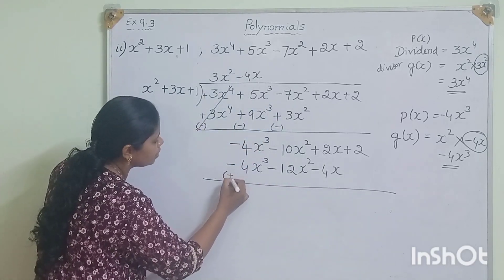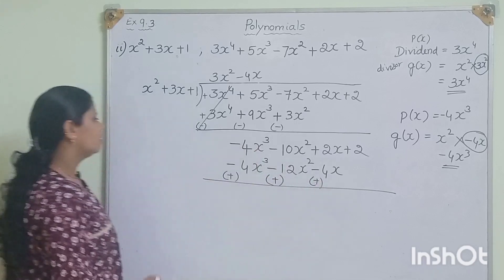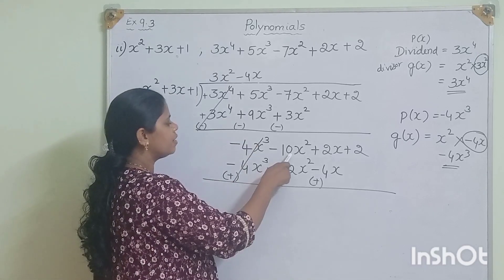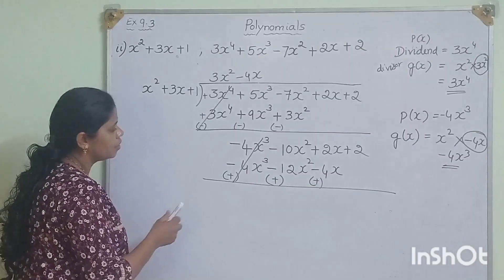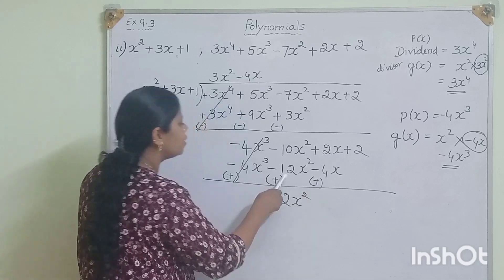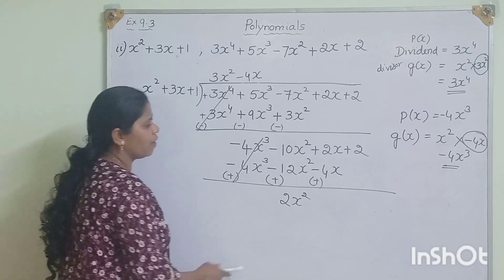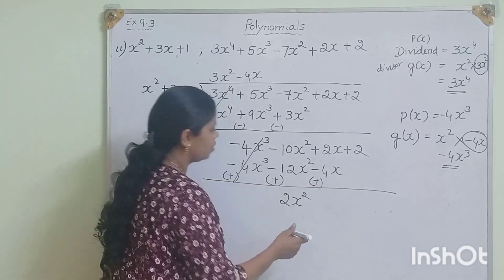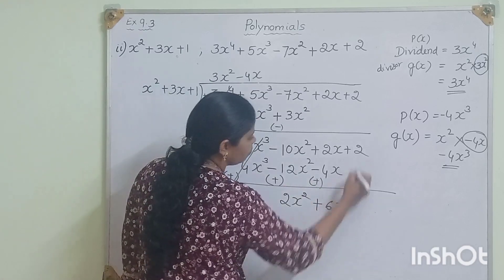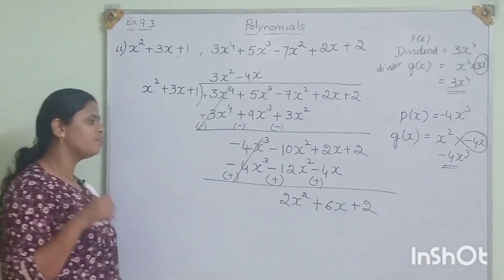We change the signs for subtraction. Minus 4x cubed plus 4x cubed cancels. Minus 10x squared plus 12x squared gives 2x squared. Plus 2x plus 4x gives plus 6x. Bring down plus 2. So we have 2x squared plus 6x plus 2.